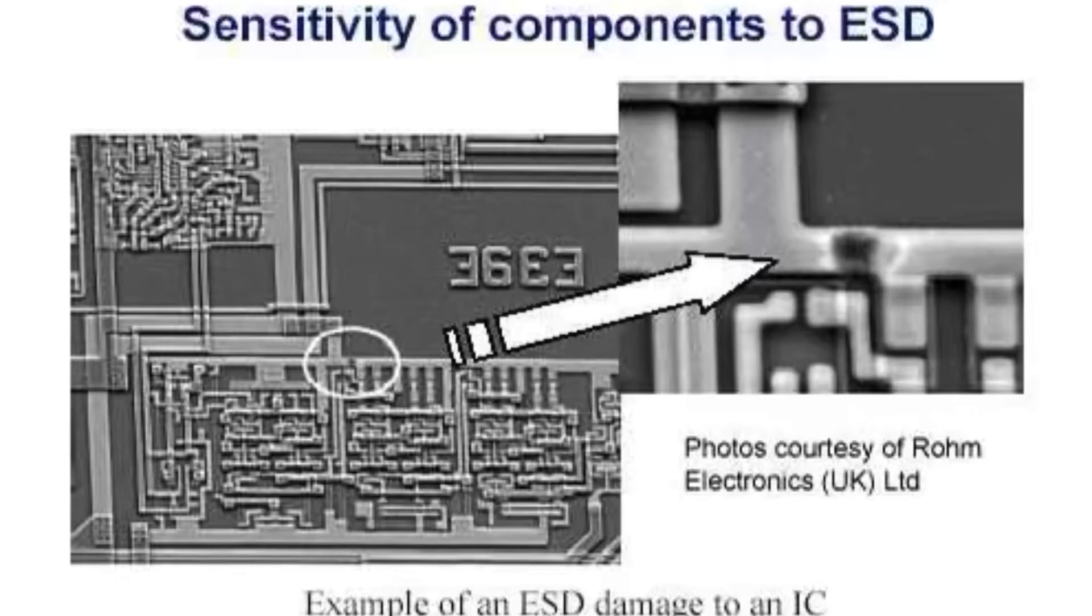This image shows real world damage to a circuit. This is a microchip that's been scanned with an electron microscope, and you can see all the individual traces. But in particular, the zoomed in portion shows a part of the trace that has been severely damaged through electrostatic discharge.